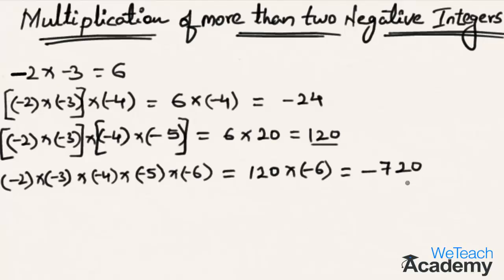From these examples we can say: the product of two negative integers is a positive integer (minus 2 into minus 3 is 6); the product of three negative integers is a negative integer (minus 2, minus 3, minus 4 is minus 24); the product of four negative integers is a positive integer (120); and the product of five negative integers is a negative integer. We can conclude that if the number of negative integers being multiplied is even, the product is positive, and if odd, the product is negative.